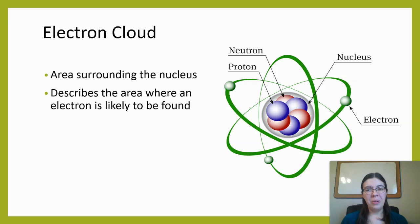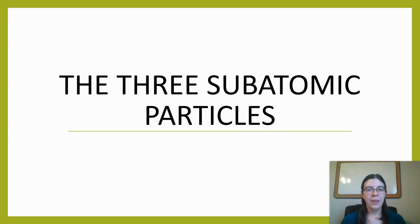Surrounding the nucleus we have the electron cloud. This is basically any area outside of the nucleus. In my picture here it's depicted by those green ovals going around the nucleus. This is the area where electrons are likely to be. There's actually something called the Heisenberg uncertainty principle which tells us we can't know exactly where electrons are, but we do know they're going to be found in this general space called the electron cloud.